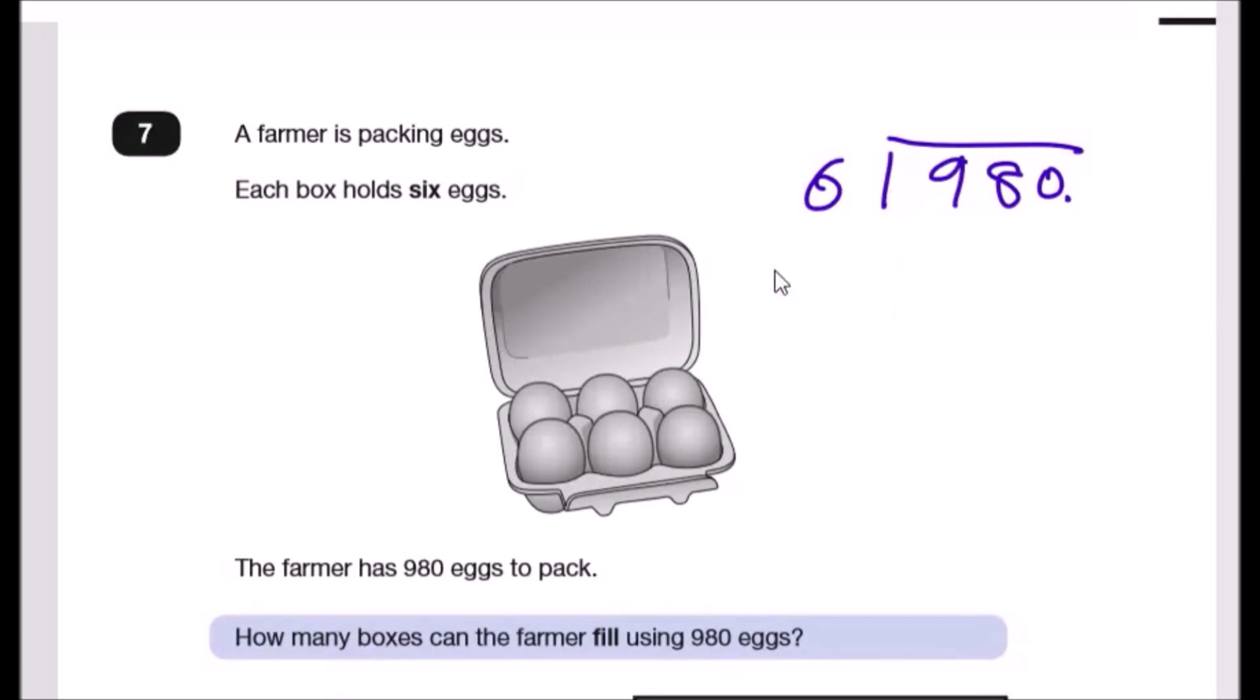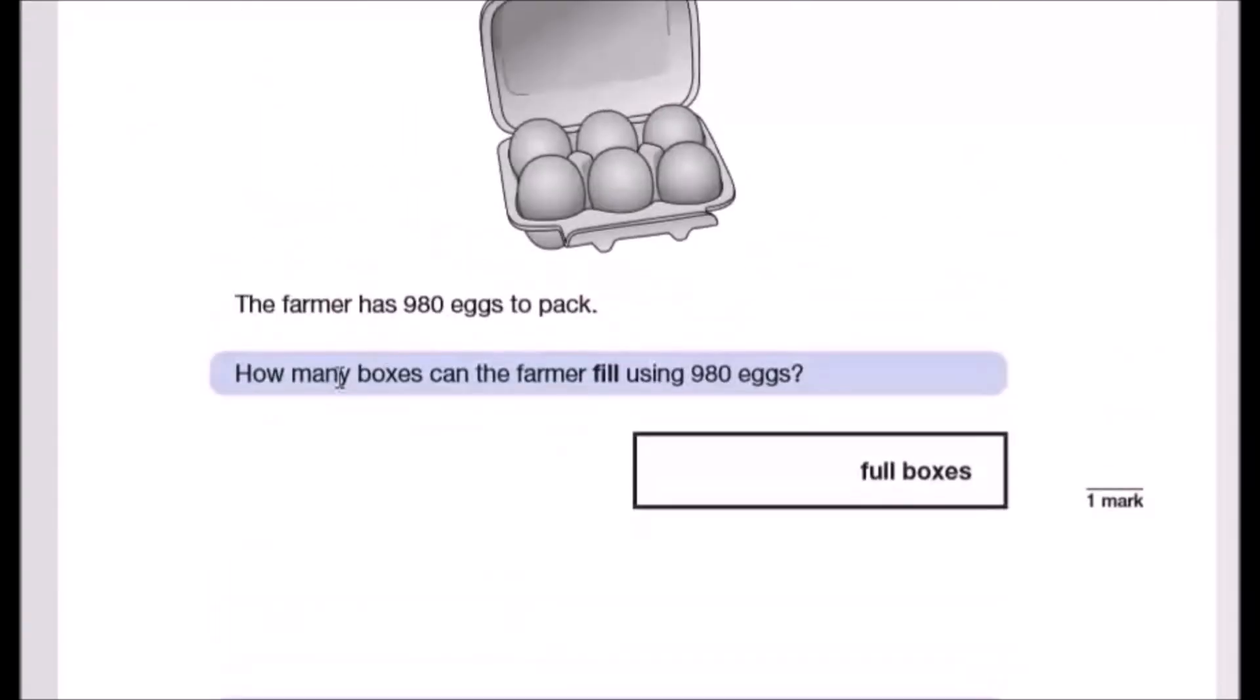First things first: how many sixes go into nine? It fits in once and has a remainder of three. Now six times six is 56, so it goes in six times with remainder two. And finally, how many sixes go into 20? Well, three sixes make 18, so that's three but we also got a remainder of two. So we can see that how many boxes can the farmer fill using 980 eggs?